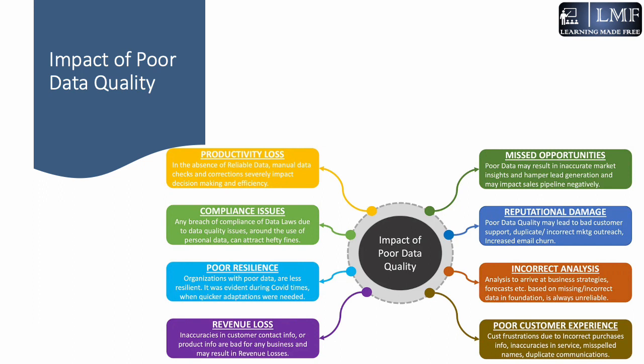Poor resilience is another impact. Organizations with poor data are less resilient, as was very evident during COVID times when quicker adaptations were needed but poor data left organizations with very low resilience. Revenue losses also occur — bad customer contact info or product info is bad for any business. If you have the right contact info of customers, you can have your marketing outreach programs delivered effectively; otherwise, those are lost customers because you are not reaching the right point of contact.